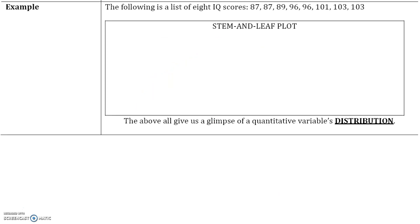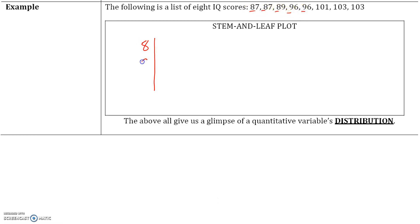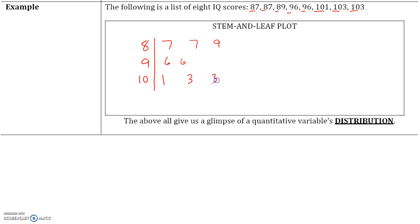Let's create a stem and leaf plot for the following distribution of quiz scores. On the left we have our stems and on the right we have our leaves. Remember that leaves can only be one digit while stems can be multiple digits. We have a stem of 8, then a stem of 9, and then a stem of 10. For stem 8, the leaves are 7, 7, and 9. For stem 9, the leaves are 6 and 6. For stem 10, the leaves are 1, 3, and 3. If you quickly look at the distribution, it is going to be bimodal since it has two peaks.